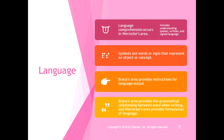You can think of Wernicke's area as the association area for language — that's where comprehension occurs, where you figure out what language really means. Broca's area is like the premotor area for language output; it provides instructions for language output, but beyond just the motor part, it also provides the grammatical relationship between words when writing. Wernicke's area provides formulation of language — putting the language together.